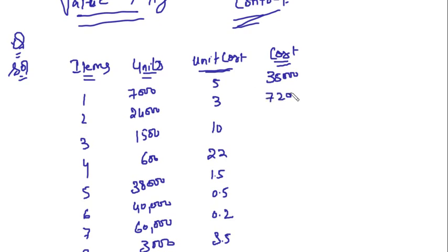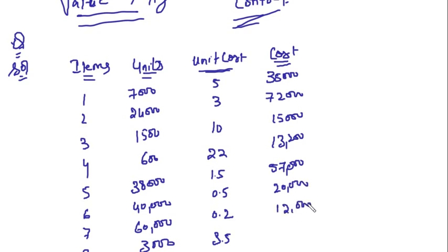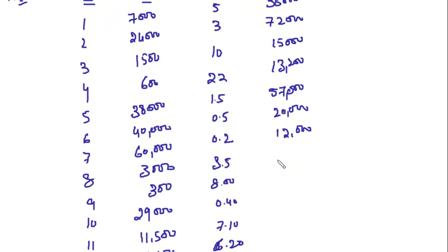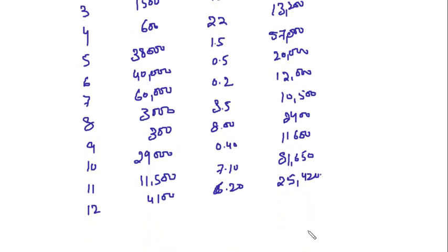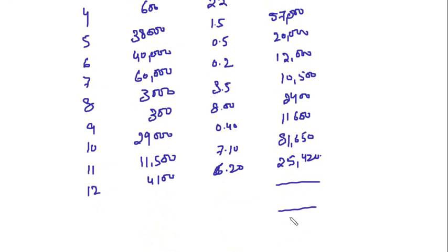Now we can calculate the total cost of material. If one unit costs 5 rupees, seven thousand units will cost 35,000 rupees. The totals come to: 72,000; 15,000; 13,200; 57,000; 22,000; 12,000; 10,500; 2,400; 11,600; 81,650; 25,420. So the total cost of material lying in the store is 3,55,770 rupees.